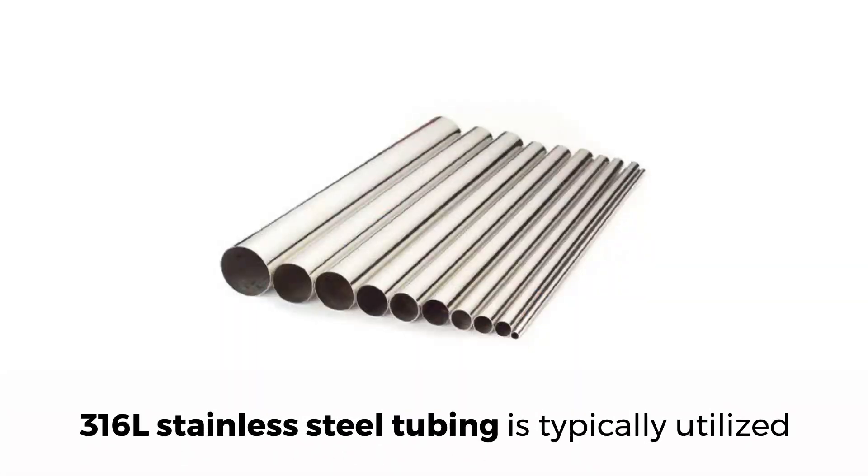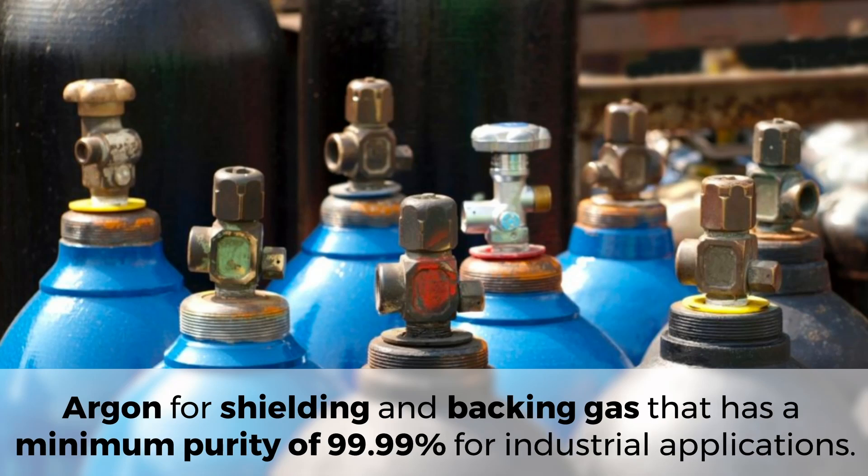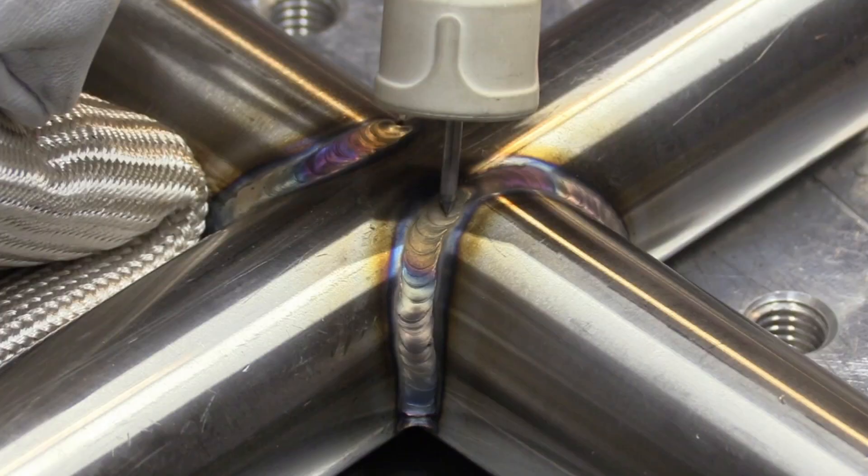316L stainless steel tubing is typically utilized, coupled with a supply of argon for shielding and backing gas that has a minimum purity of 99.99% for industrial applications. The quality of orbital welds depends on the quality of the materials employed.